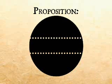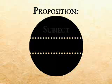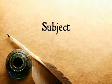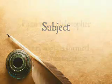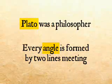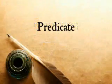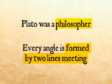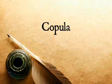Three things go into the nature and constitution of a proposition: the subject, the predicate, and the copula. The subject of a proposition is the thing about which anything is going to be affirmed or denied. In our examples, the subject was 'Plato' and 'angle.' The predicate is that which is affirmed or denied about the subject — for example, that Plato was a philosopher, or that an angle is formed by two lines meeting. It is what is affirmed or denied of the subject.